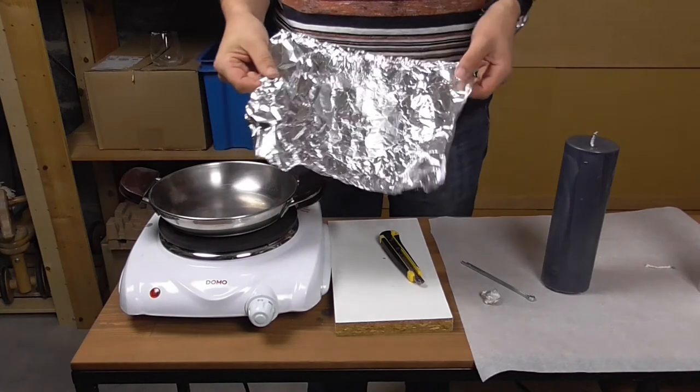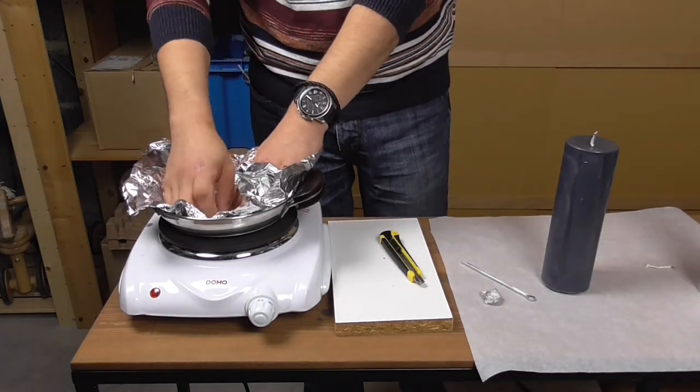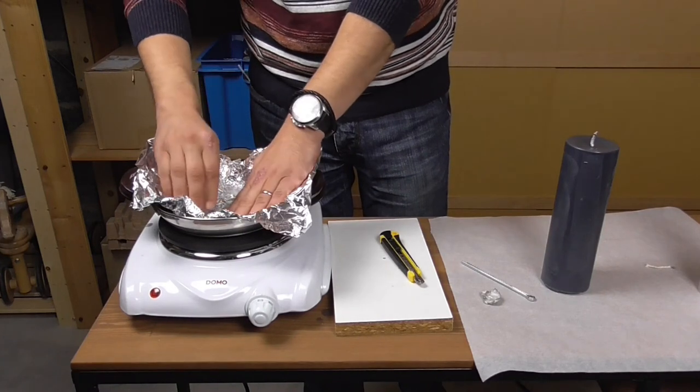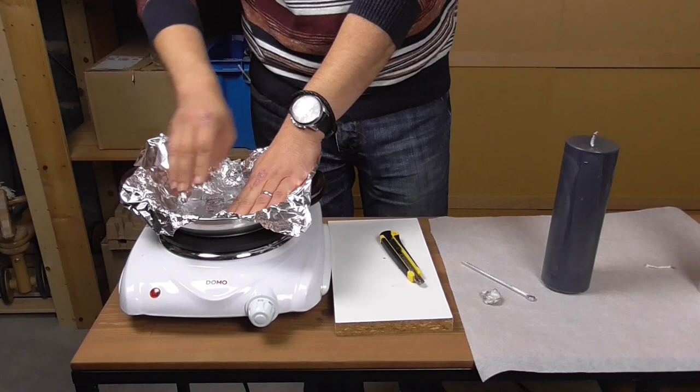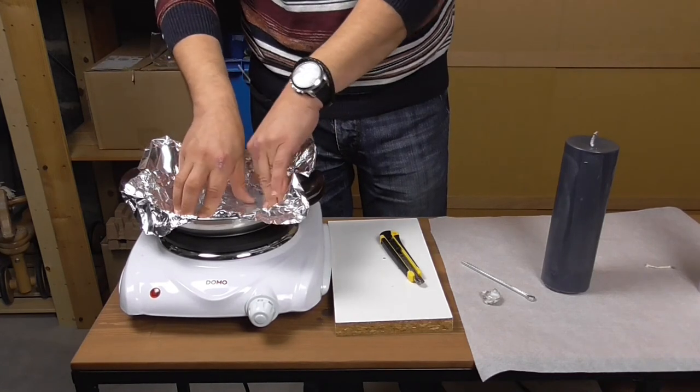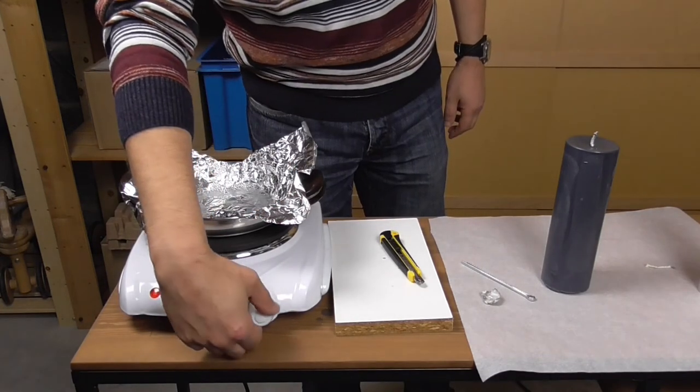To level the base of the candle, you'll need a piece of aluminum foil, a small pan and your heat plate. Apply the aluminum foil to the bottom of the pan. You need to ensure the foil is flat and doesn't move inside the pan. Now turn the heat plate on.